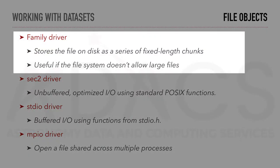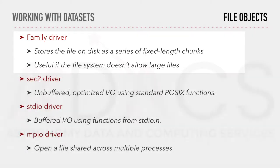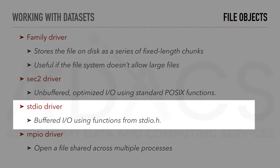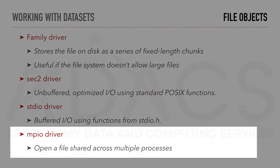The family driver stores the file on disk as a series of fixed-length chunks, which is useful if the file system doesn't allow large files. Sec2 is an unbuffered optimized I/O using standard POSIX functions. stdio is a buffered I/O using functions from the stdio library. mpioDriver opens a file shared across multiple processes and is for MPI.